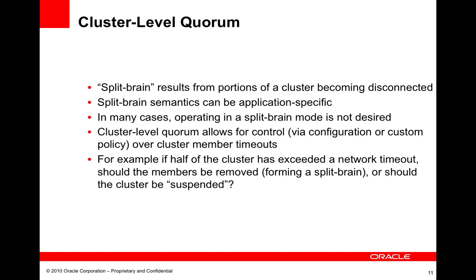We have this concept of cluster-level quorum, which allows us to control — either via configuration using out-of-the-box policies or via a custom policy implementation — how Coherence will enforce member timeouts. Coherence has a packet timeout which defines an SLA on the maximum amount of time a packet has to be sent, received, acknowledged, and returned. Pre-3.6, exceeding a member timeout would result in the member being killed. What cluster-level quorum allows us to do is exert control over how those timeouts are handled — whether the timeout results in the member being killed, which would result in a split brain, or whether we enter into a suspended mode instead.